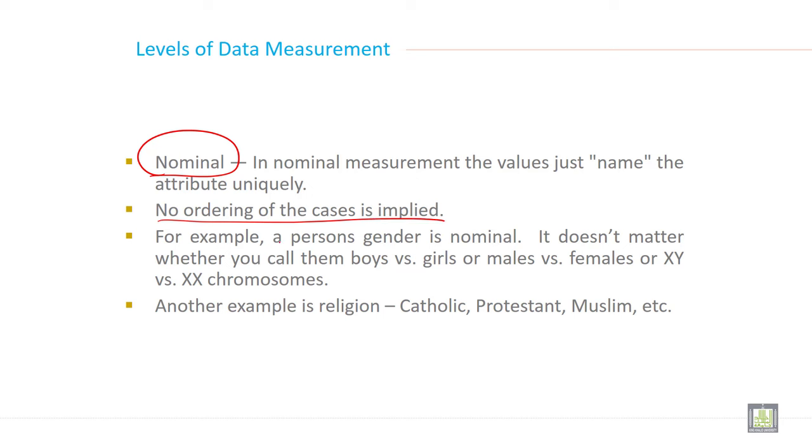For example, a person's gender is nominal. It doesn't matter whether you call them boys versus girls, males versus females, or XY versus XX chromosomes. Another example is religion - Catholic, Protestant, Muslim, etc.